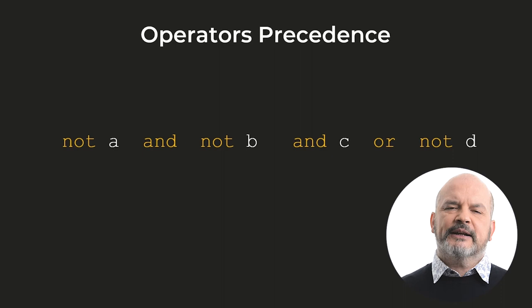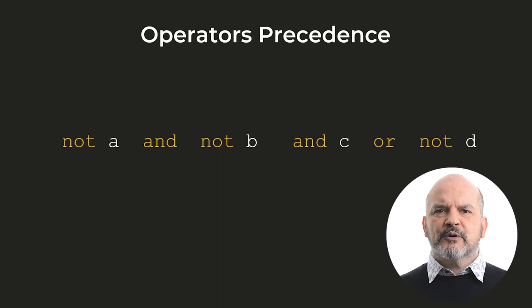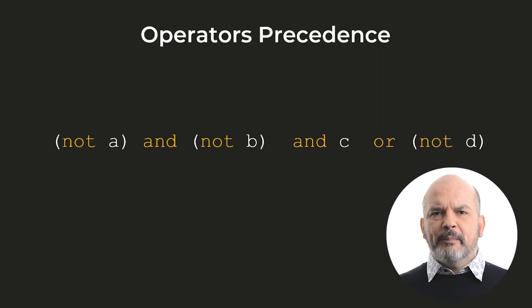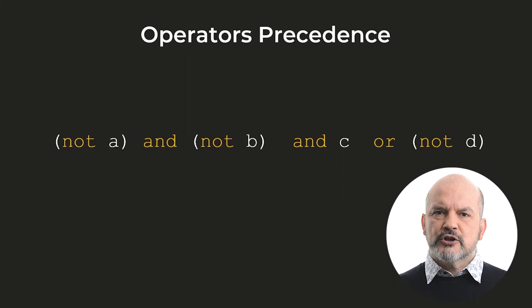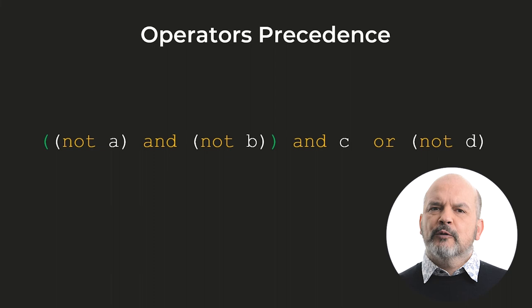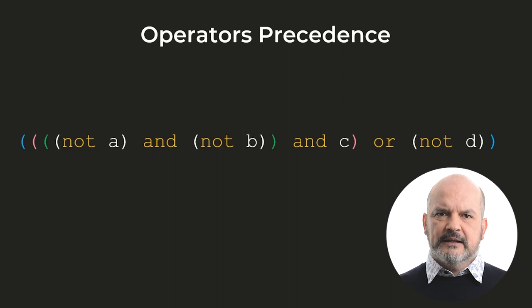However, it might be very difficult to see what the result of the expression would be given the values A, B, C, and D. The operator NOT has the highest precedence and is therefore evaluated first. The expression is equivalent to NOT A and NOT B and C or NOT D. Then the leftmost AND operator is evaluated, followed by the second AND operator. Finally, the OR operator, which has the lowest precedence of the three operators, is evaluated.